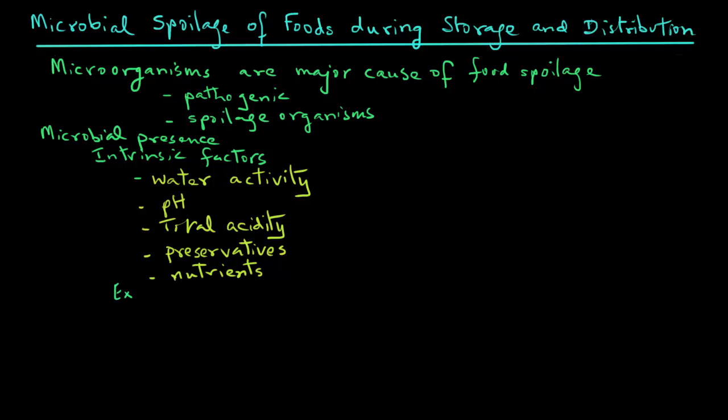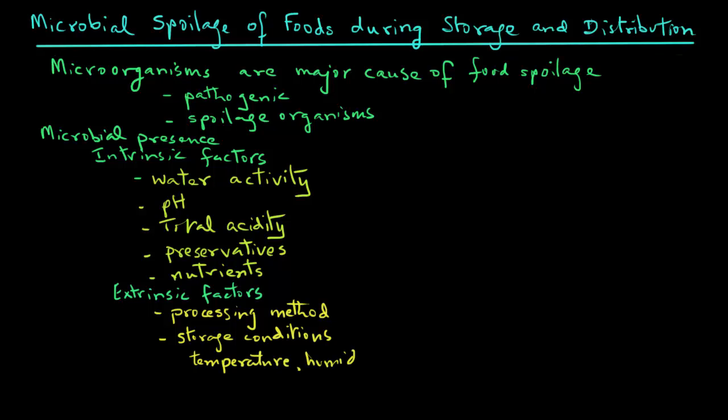The extrinsic factors, those are the factors on the outside of the food, involve things like what sort of processing method was used to prepare that food. Also, the storage conditions, such as temperature, humidity, the gas composition, for example in the package, will also have an impact.